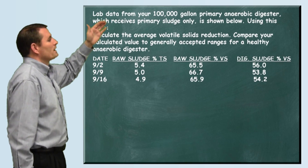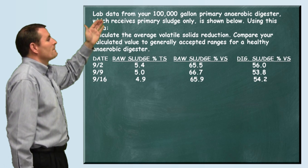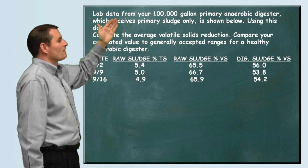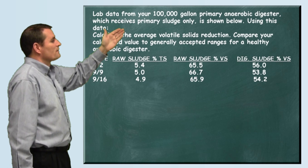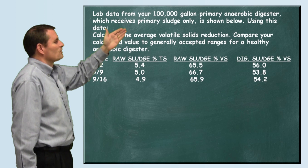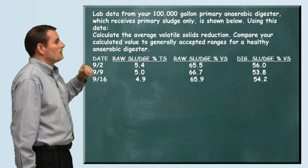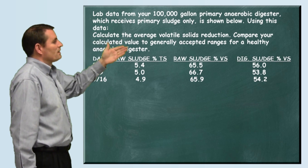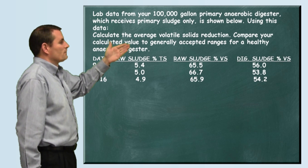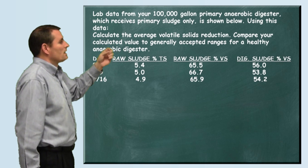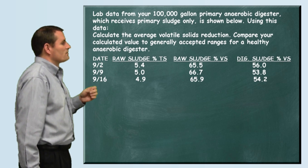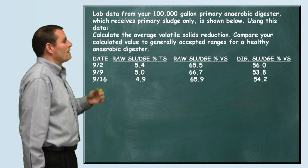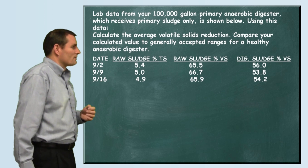The problem reads: lab data from your 100,000 gallon primary anaerobic digester, which receives primary sludge only, is shown below. Using this data, calculate the average volatile solids reduction. Compare your calculated value to generally accepted ranges for a healthy anaerobic digester.